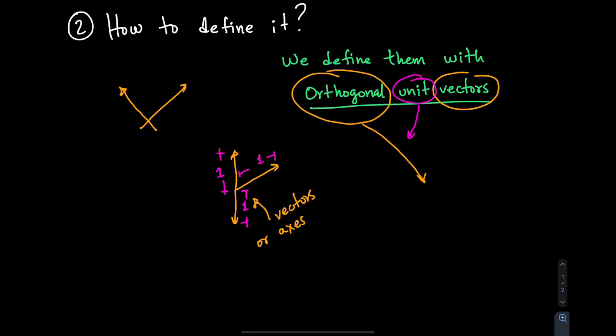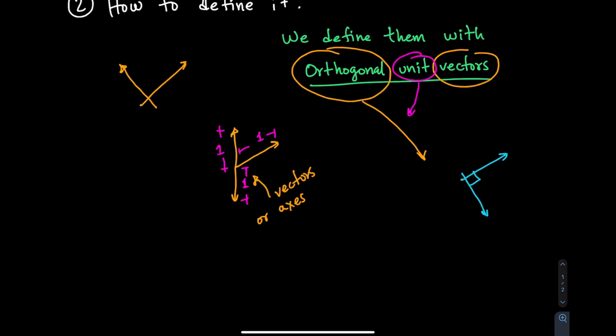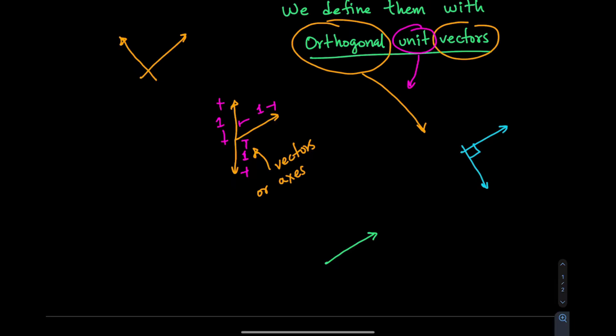Orthogonal means we normally choose vectors that are 90 degrees apart from each other. This is not the only way you could define a coordinate system, but it is convenient. There is no restriction on using vectors that are not 90 degrees apart, though that might add unnecessary complexity. By choosing orthogonal unit vectors, you end up with drawings showing three vectors 90 degrees apart for three-dimensional space.